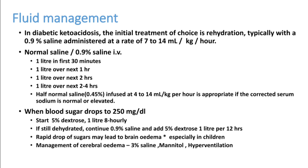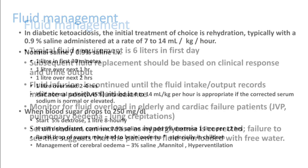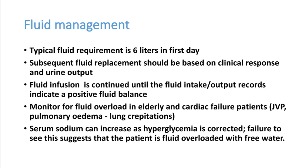The recommended blood sugar reduction rate is 50–75 mg/dL per hour — that reduction is sufficient. Typical fluid requirement in DKA is around 6 liters in the first 24 hours; subsequent fluid replacement should be based on clinical response and urine output. Maintain a strict intake/output chart and monitor for fluid overload — especially in cardiac failure patients — by checking JVP, echo, and pulmonary crepitations.